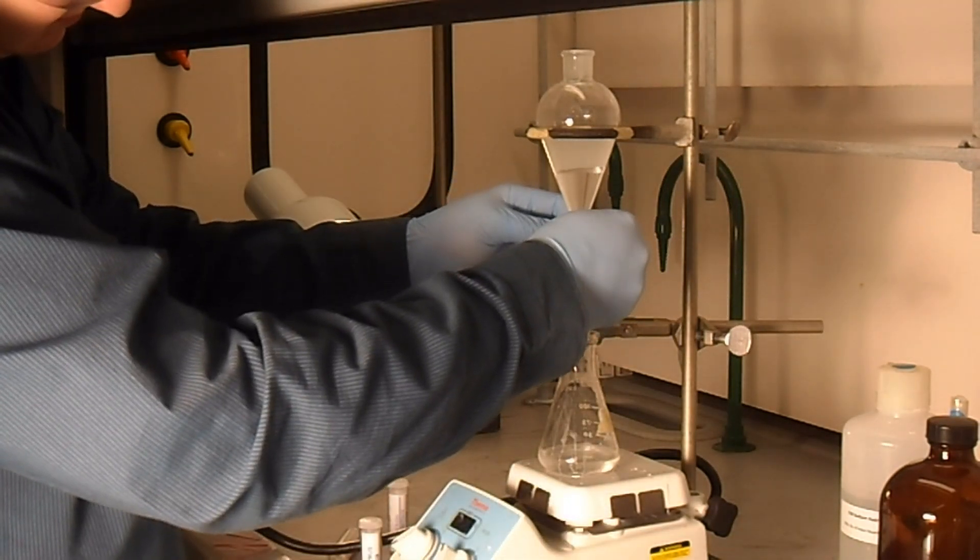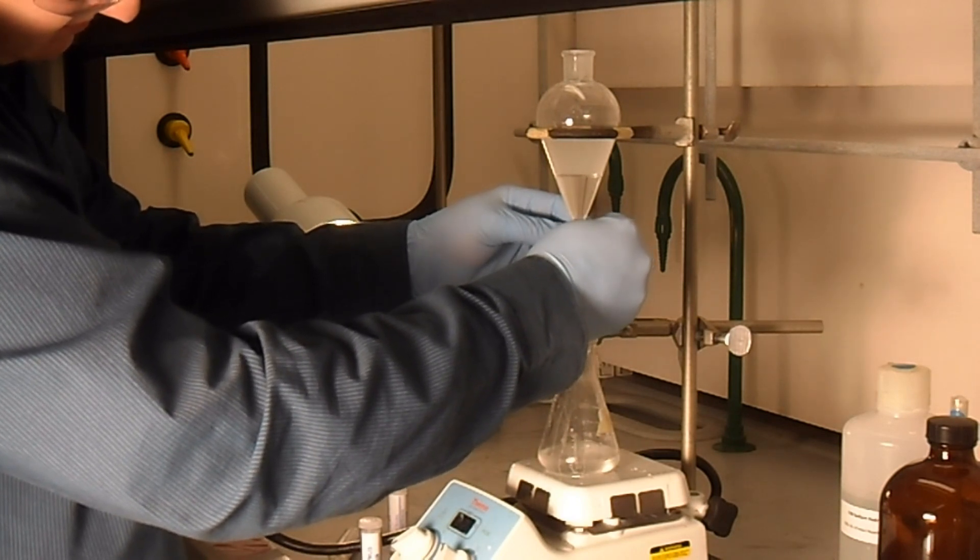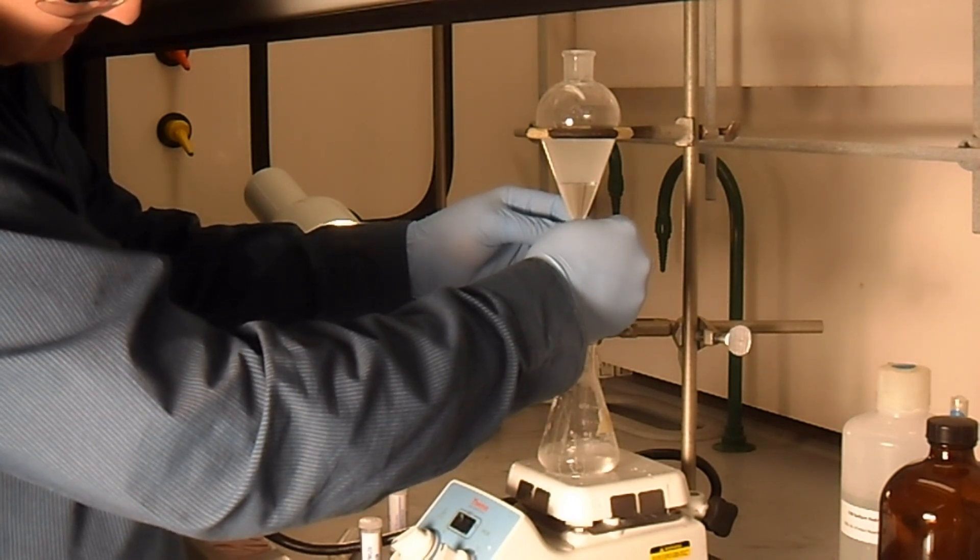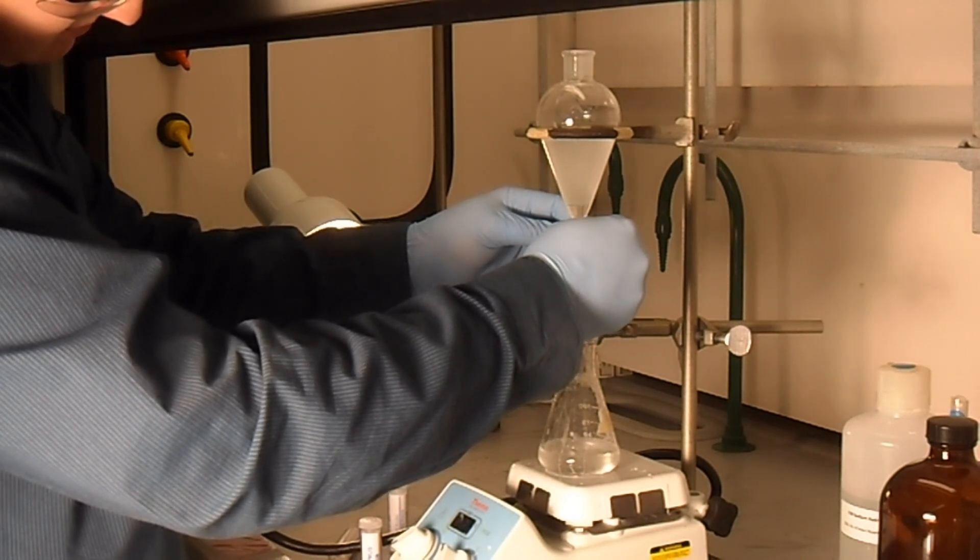Once our layers are separated, we can dispense our second DCM layer into our previous DCM layer. Then, we can use sodium sulfate as our drying agent in this case to dry our DCM.